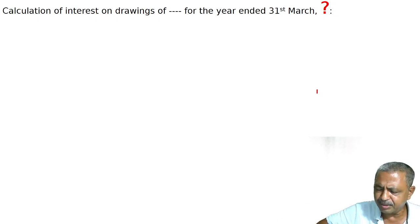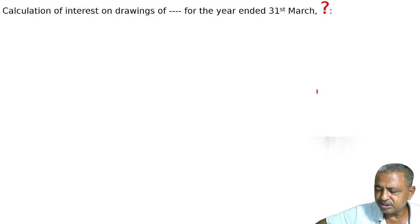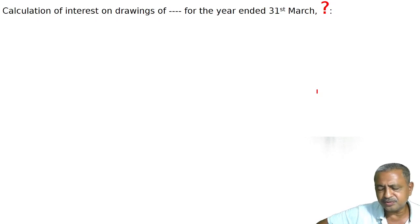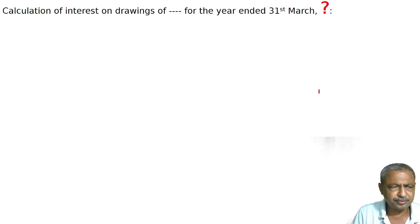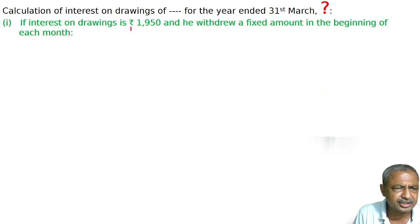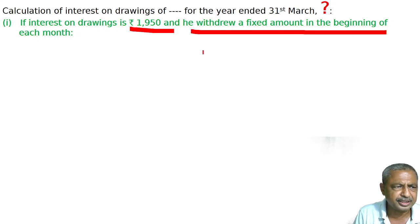This particular question is: calculate the amount of monthly drawings for the year ended 31st March, given in the following alternative cases. When the partnership deed allows interest on drawings at 10%, if interest on drawings is 1950, and he withdrew a fixed amount at the beginning of each month.